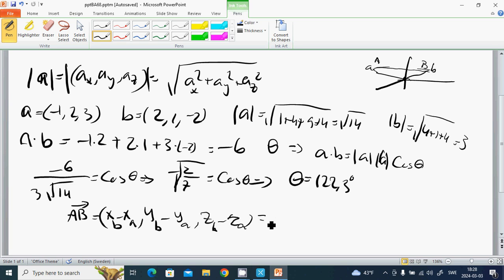AB equals (2 - (-1), 1 - 2, -2 - 3) = (3, -1, -5).